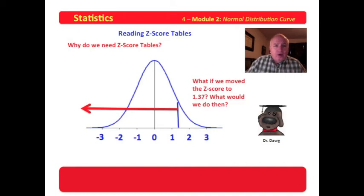The problem is, what if it doesn't fall on a standard deviation? What if it fell on something like 1.37? How then would we find the area to the left of that particular boundary?